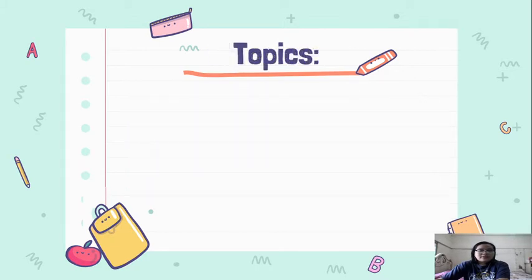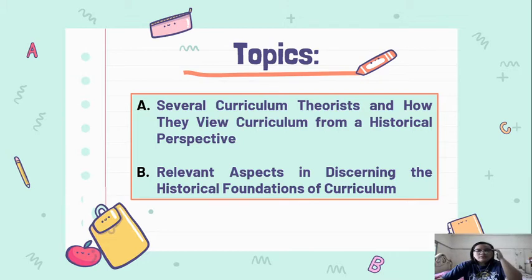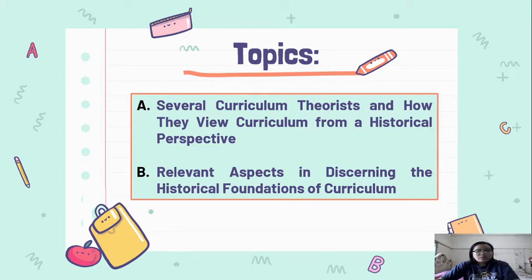In discussing the historical foundations, we will tackle first the several curriculum theorists and how they view curriculum from a historical perspective. We also have the relevant aspects in discerning the historical foundations of curriculum. History is an epitome of past failures and successes, either academically related or not. The history of education enables the people involved in curriculum planning and designing to know what not to include in the curriculum, and its history helped the curriculum developer to include what is needed, considering the needs of society and the future demands of the country.